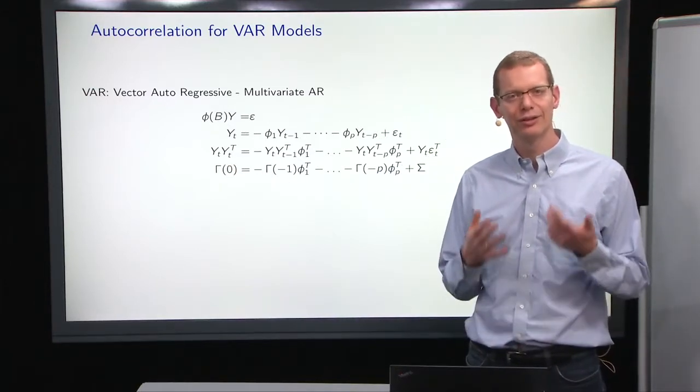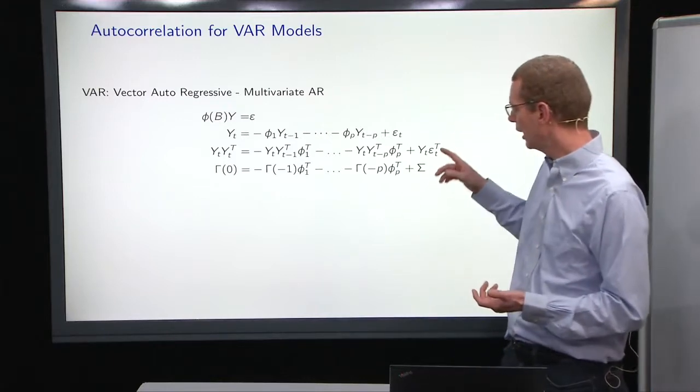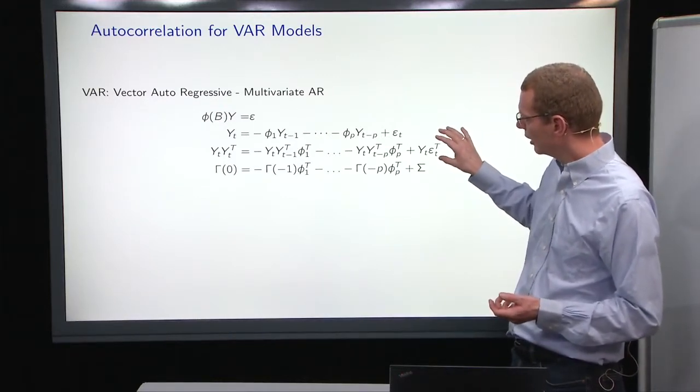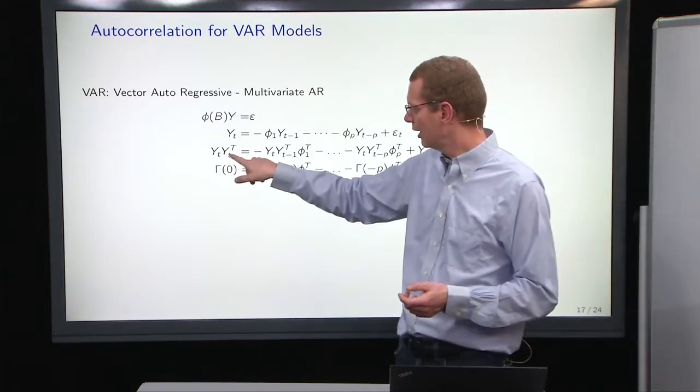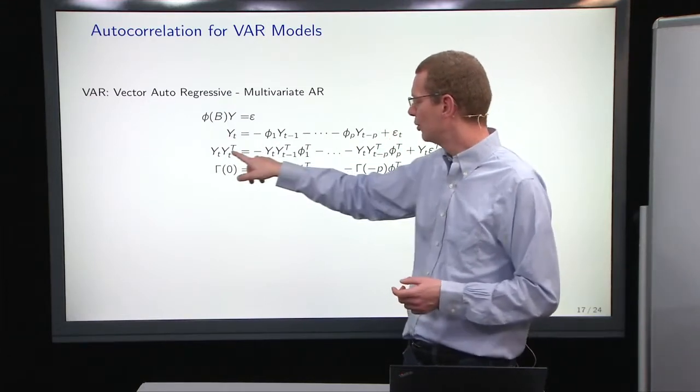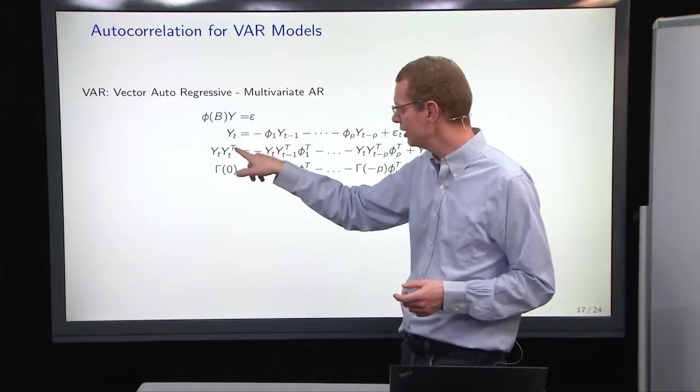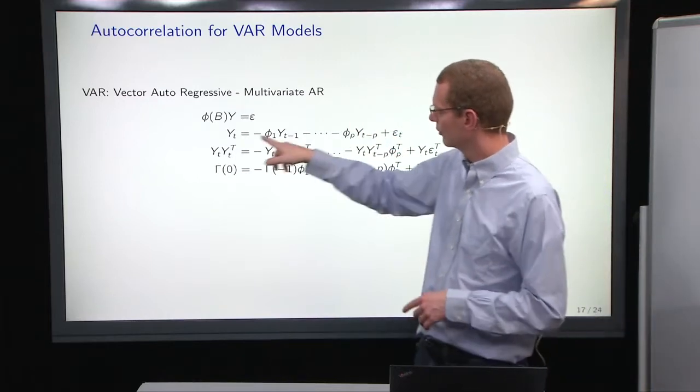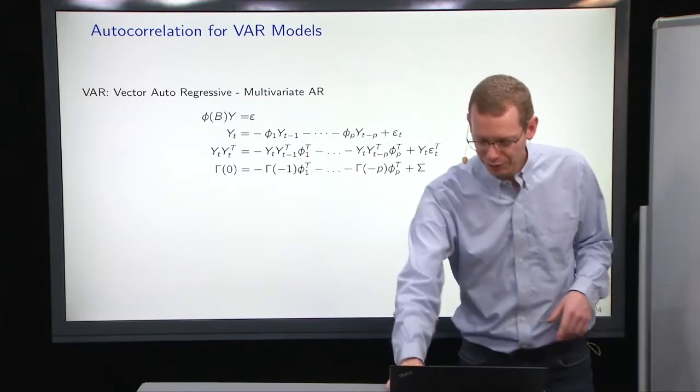So that was for the variance. Now, there's one thing about the variance, it's symmetric, and when you look at this, I could have, instead of inserting the process, I could have post-multiply by y_t and kept the process untransposed. If I do that, I get a very similar expression.